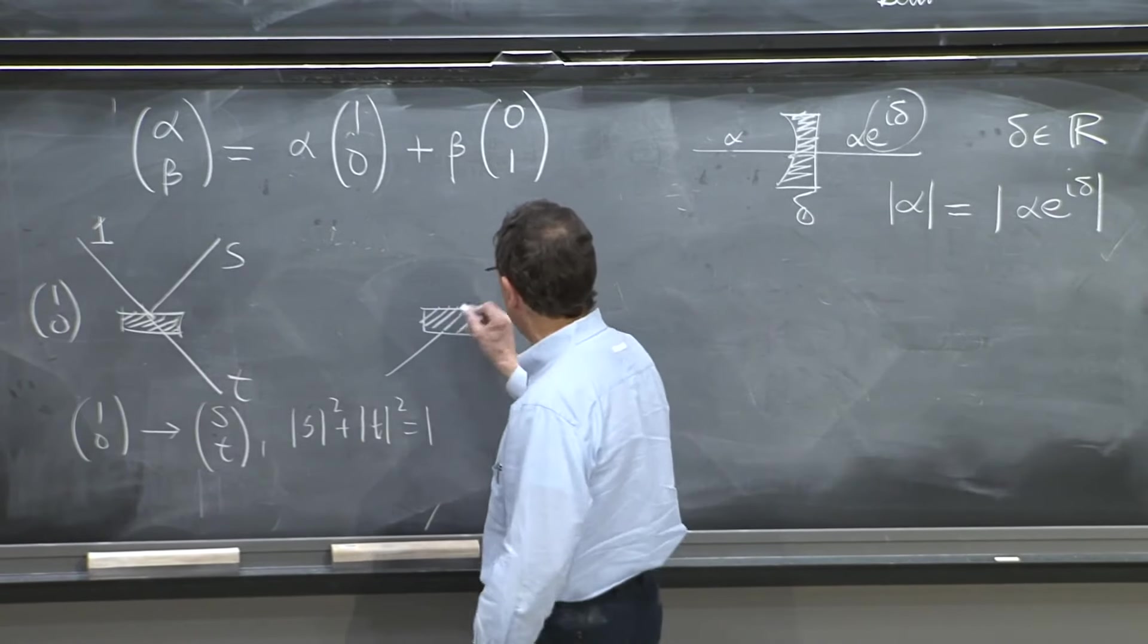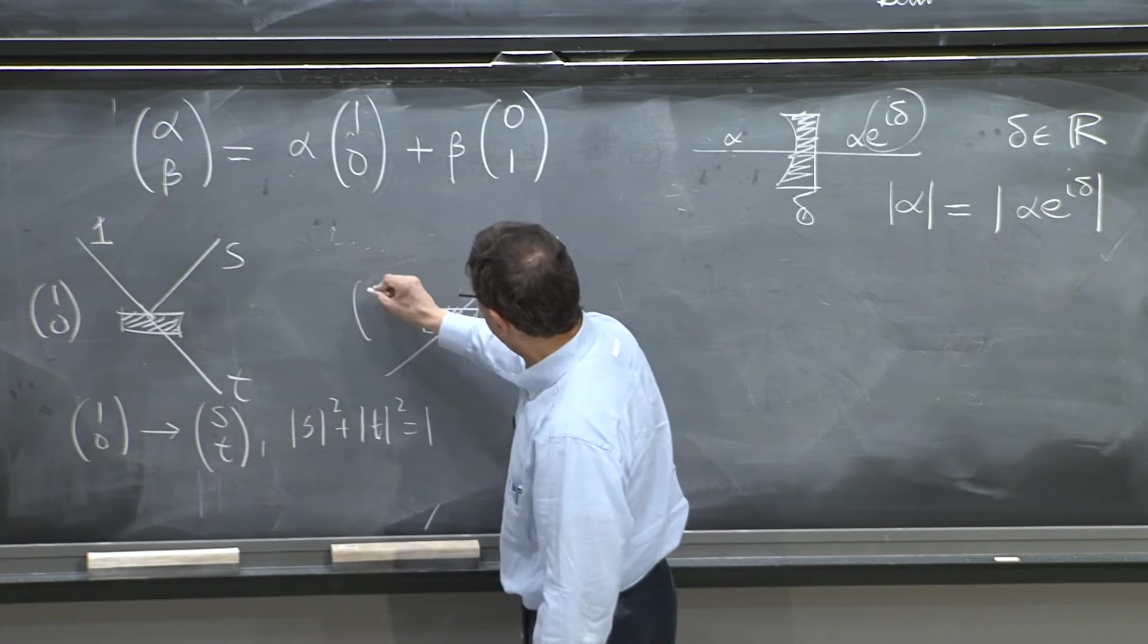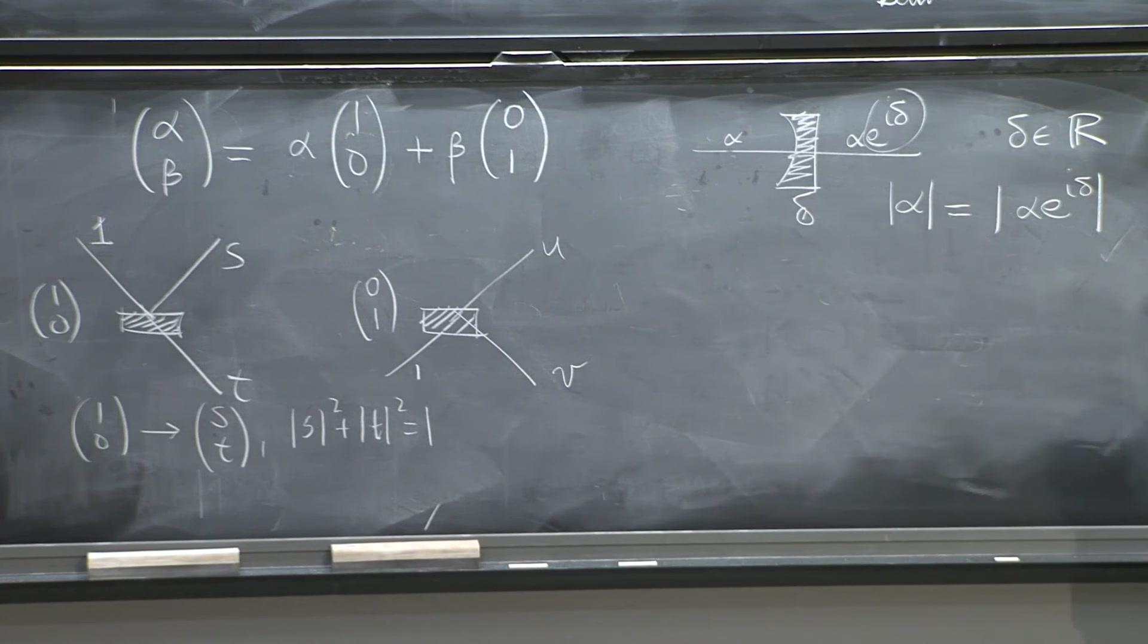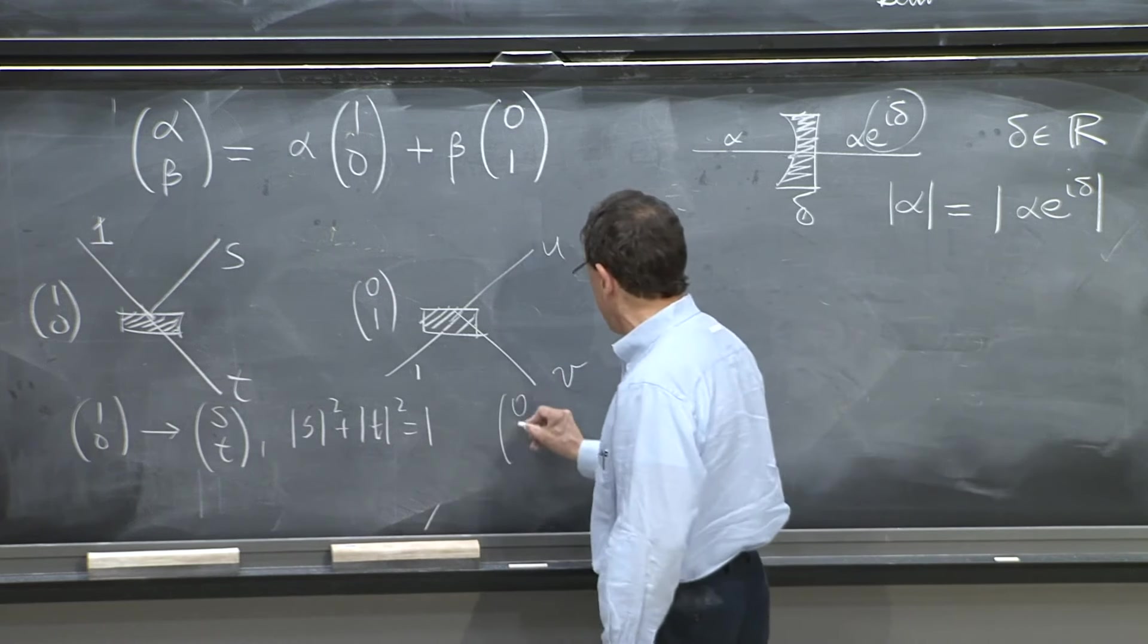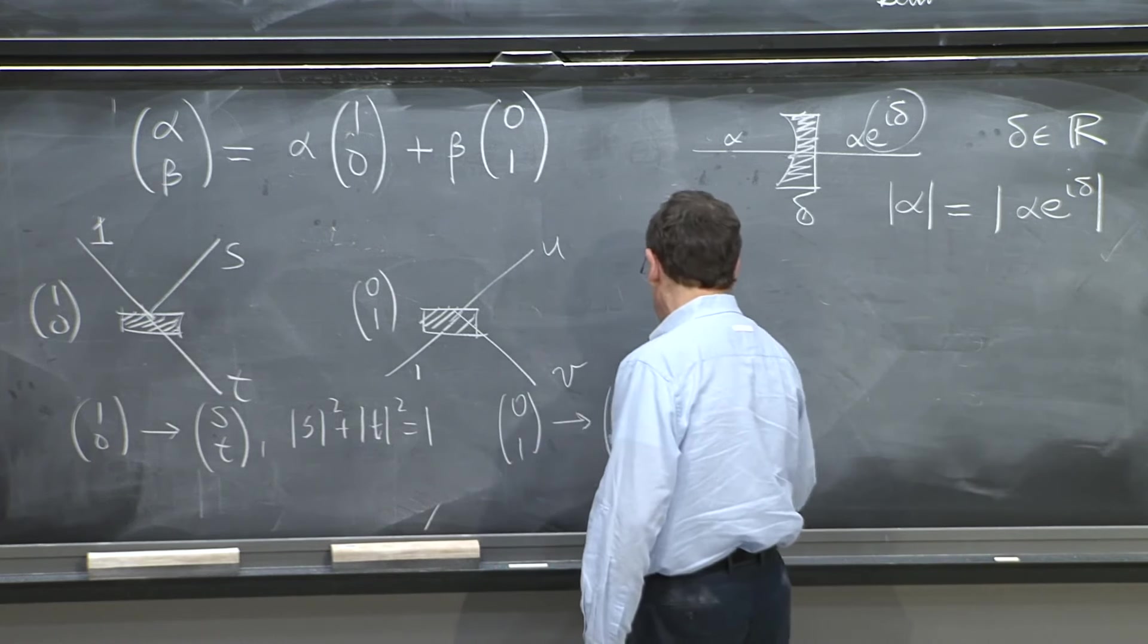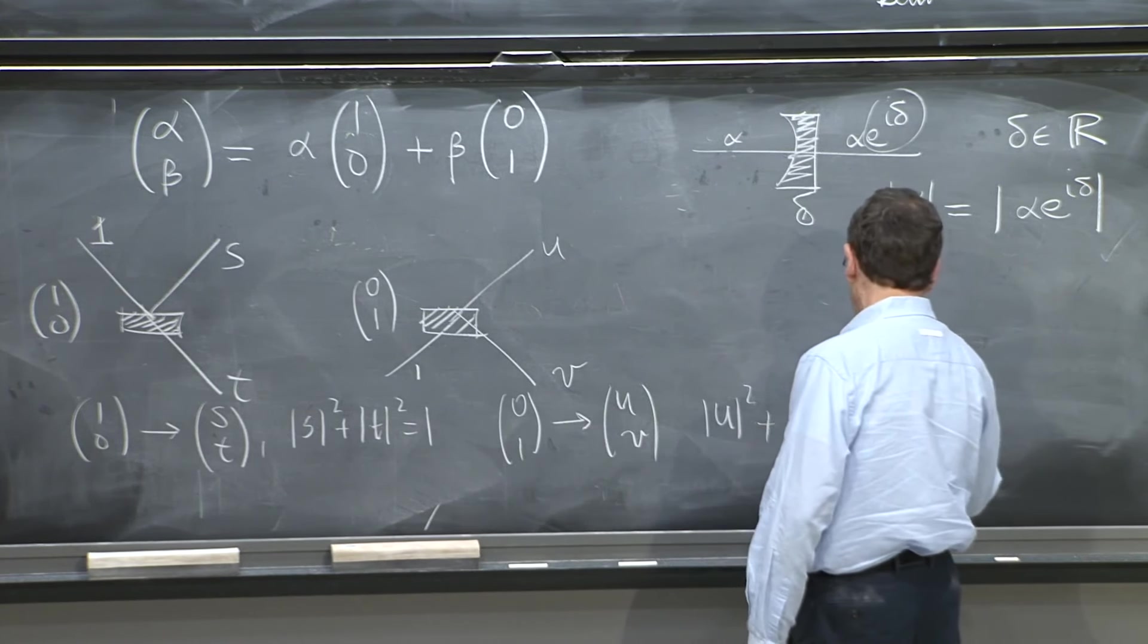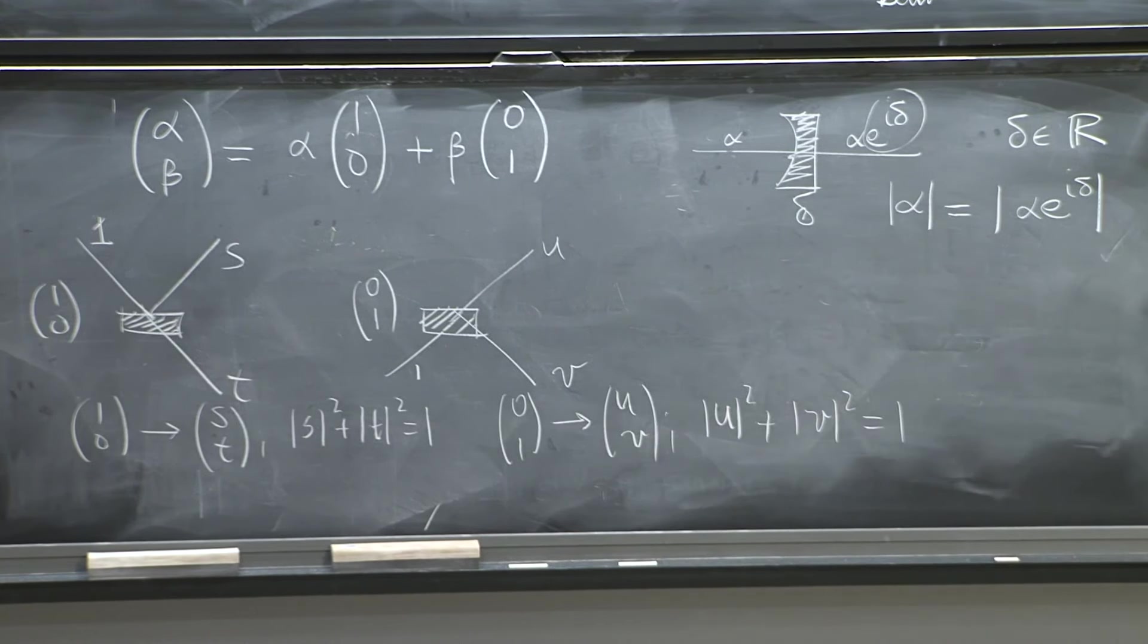Now, you may also have a photon coming from below and giving you a (U,V), so this would be a (0,1) photon, giving you (U,V). And therefore, we would say that (0,1) gives you (U,V). And you would have |U|^2 + |V|^2 = 1. So we need apparently four numbers to characterize the beam splitter. And let's see how we can do that.